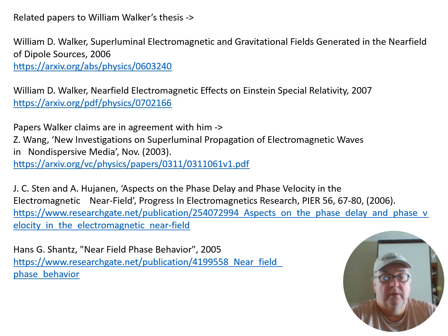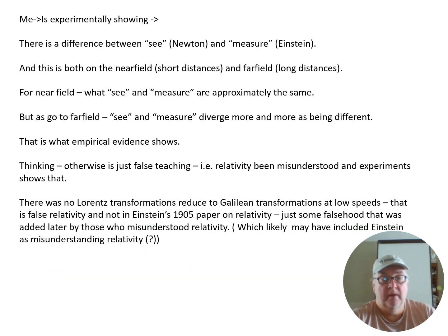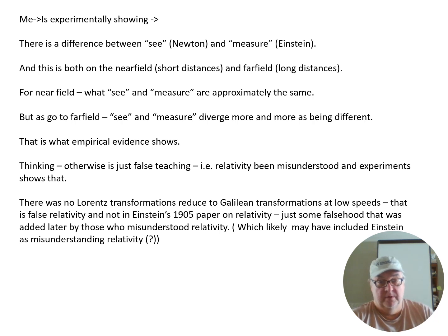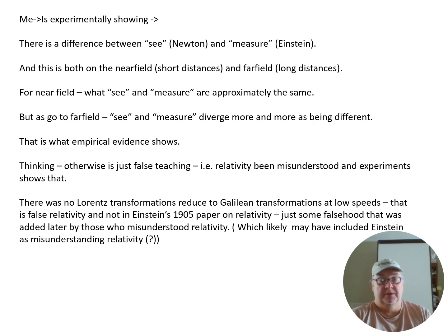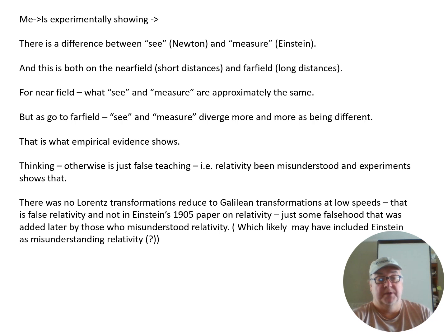Walker's thesis and related papers experimentally show that there's a difference between c, which is Newtonian, and measure, which is Einsteinian — both in the near field, which is short distances, and the far field, which is long distances. In the near field, what we see and measure are approximately the same thing. But as you go to the far field, c and measure diverge more and more, and that's what the empirical evidence shows.